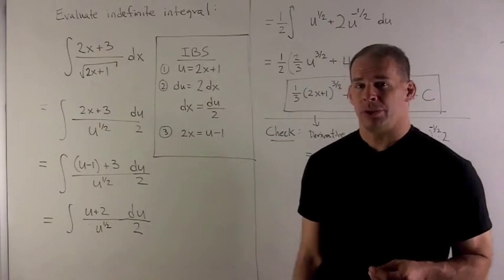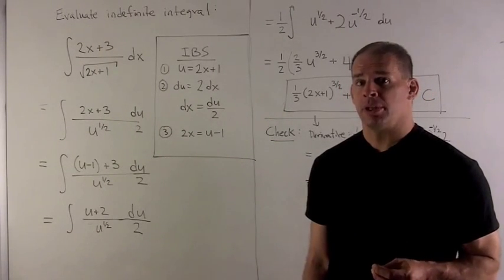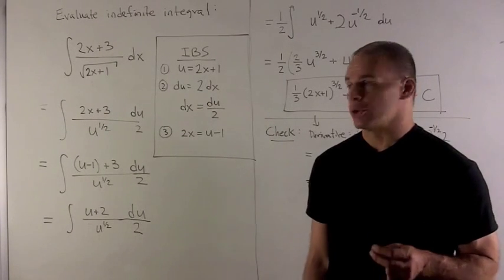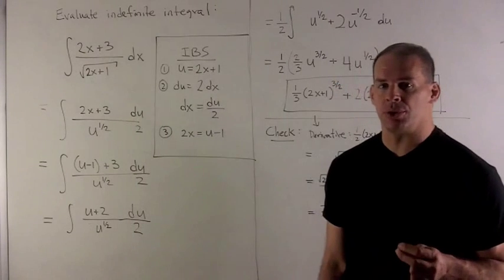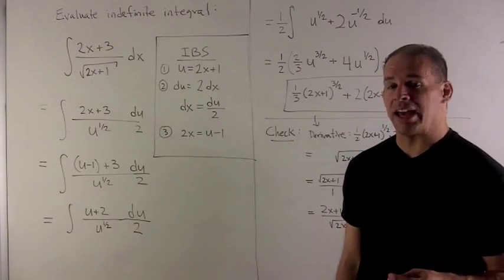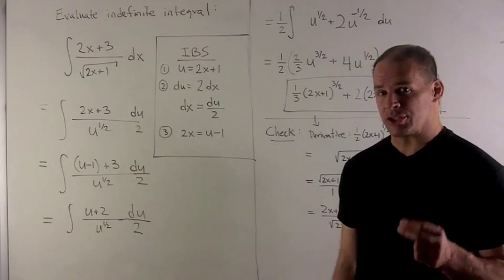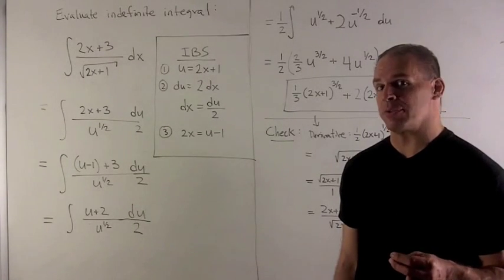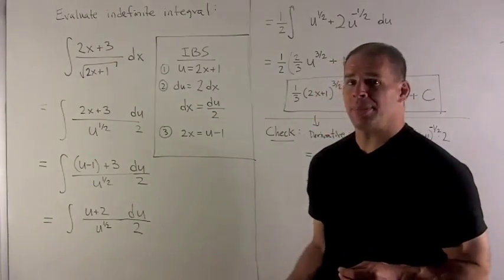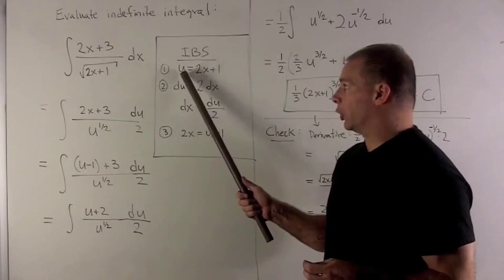We know there's a composition in this problem, so that means integration by substitution. I go for my list for integration by substitution. What I have to do first is target the inside of the composition, the function we evaluate first if we stick numbers in. In this case, it's 2x plus 1, so I'm going to set that equal to my u.